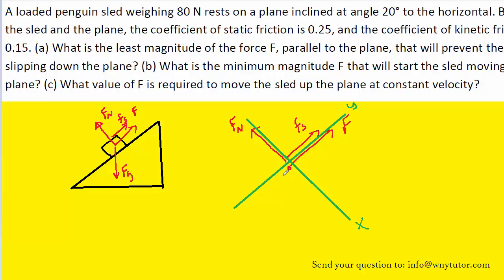When a box is on a ramp, the component of gravity that points parallel to the surface of the ramp is always going to be Fg sine theta. And then the component that points perpendicular to the surface of the ramp is always going to be Fg cosine theta.